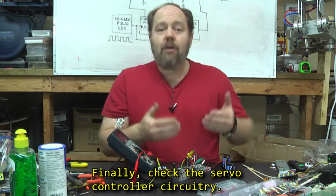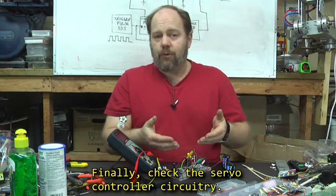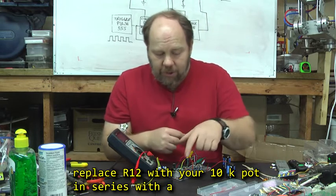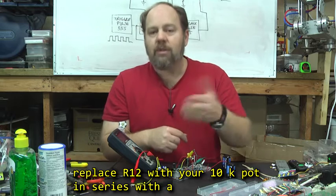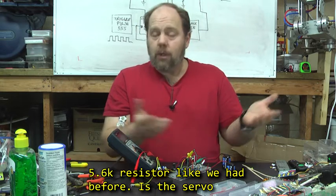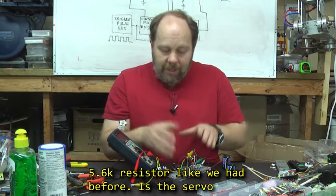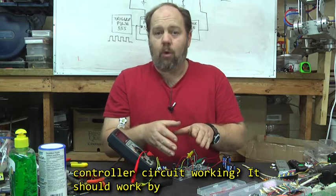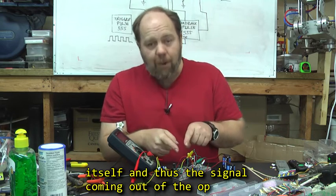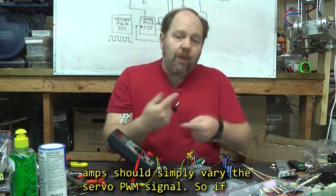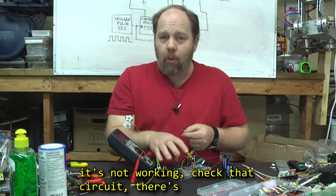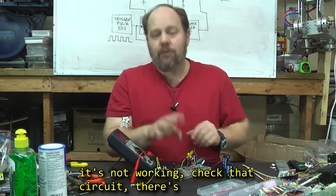Finally, check the servo controller circuitry. Actually disconnect the op-amp circuit from pin 5 and replace R12 with your 10k pot in series with a 5.6k resistor, just like we had before. Is the servo controller circuit working? It should work by itself, and thus the signal coming out of the op-amps should simply vary the servo pulse width modulation signal. So if it's not working, check that circuit, there's something wrong there.